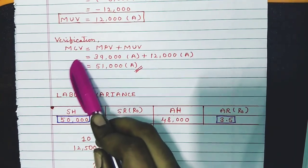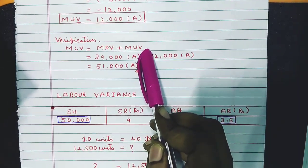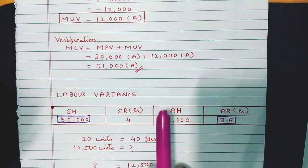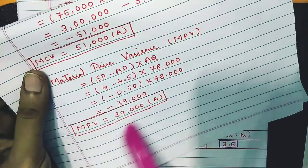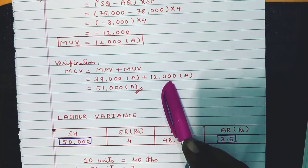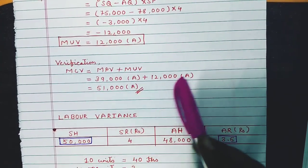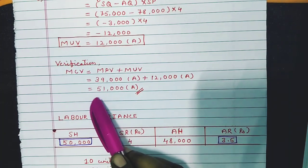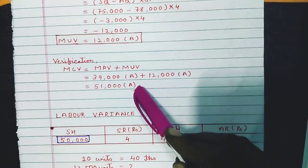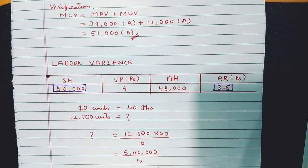Verification: MCV should equal MPV + MUV. MPV is 39,000 Adverse and MUV is 12,000 Adverse, so 39,000 + 12,000 = 51,000 Adverse. This matches our computed MCV of 51,000 Adverse — verified.